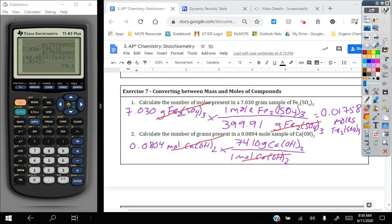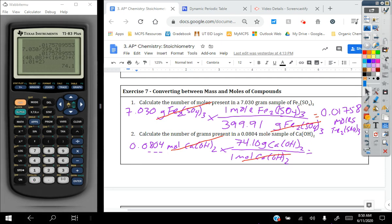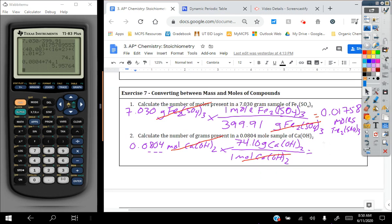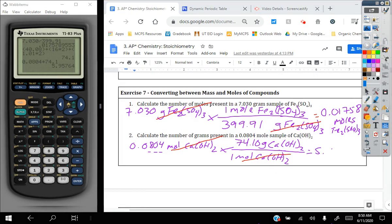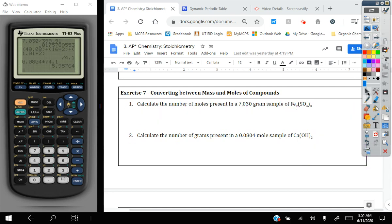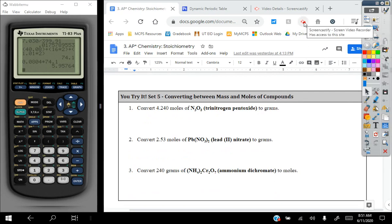Moles cancel. And then when I get my final answer, this one only has three significant figures. So 0.0804 times 74.1. And I get 5.957. That will round up to a six. So I get 5.96 grams of calcium hydroxide for my final answer. And that's in three sig figs. Go ahead and do the You Try It set number five.